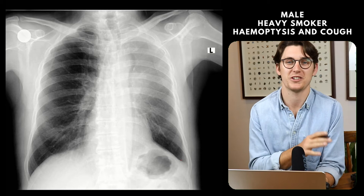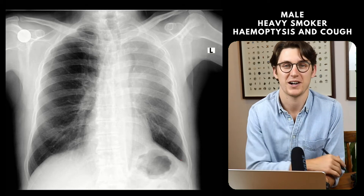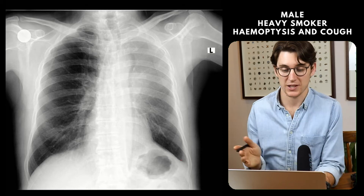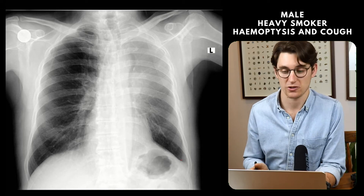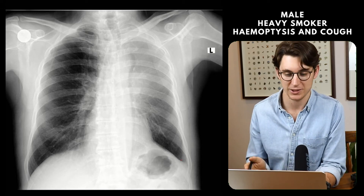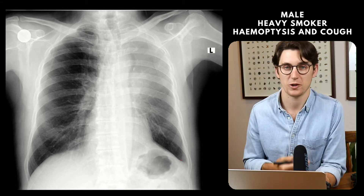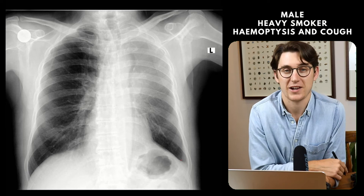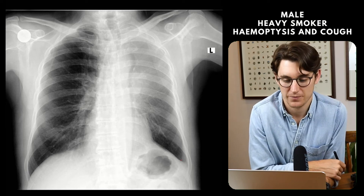Go ahead, pause the video, come up with your summary and join me for my approach. I'd start by saying this is a frontal chest radiograph of a skeletally mature male who presents with hemoptysis and a cough on the background of a significant smoking history.